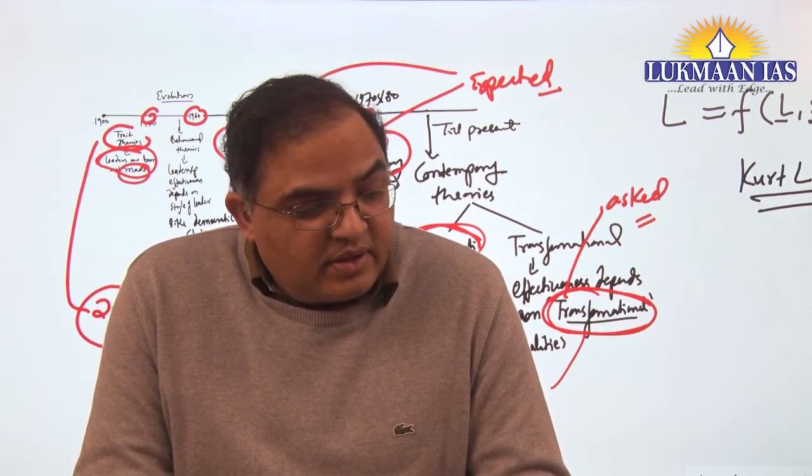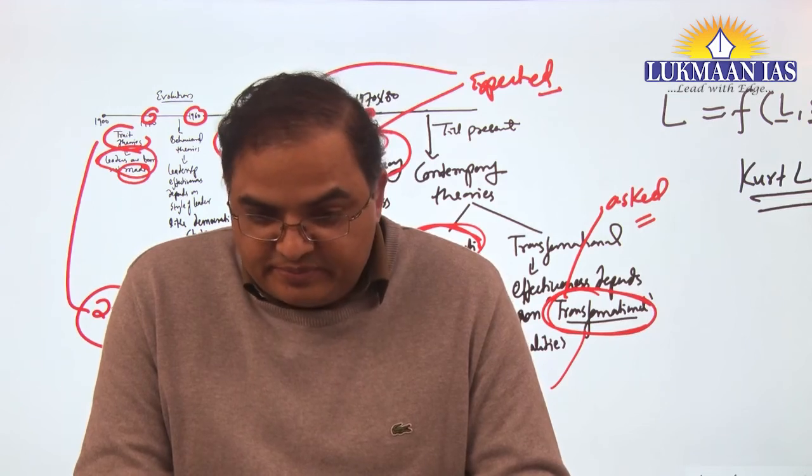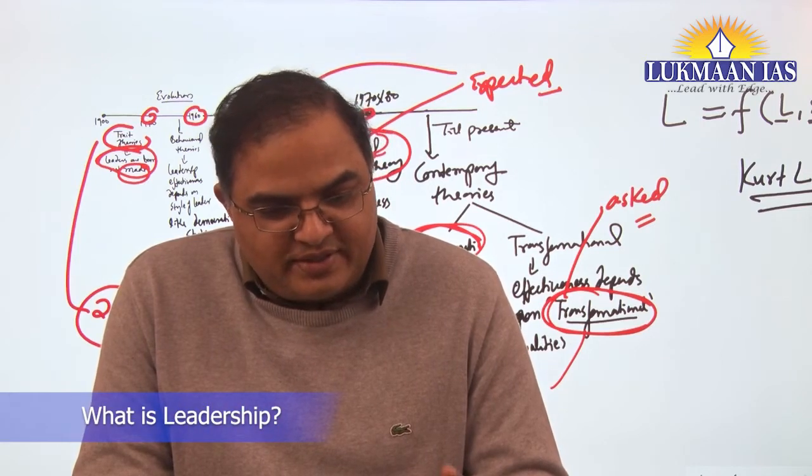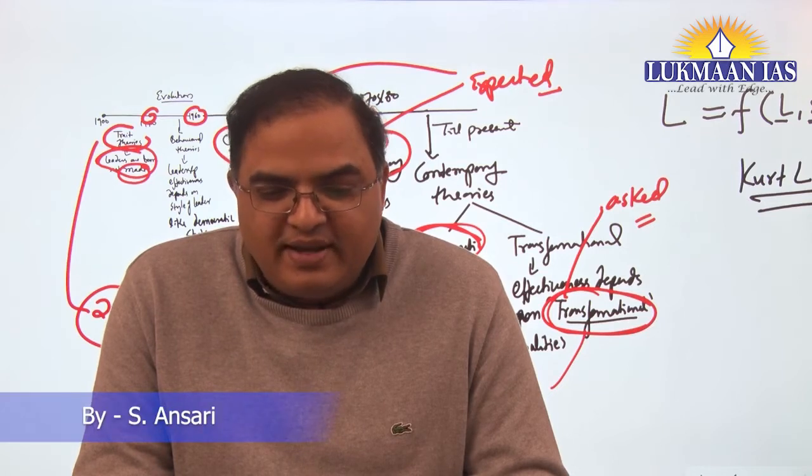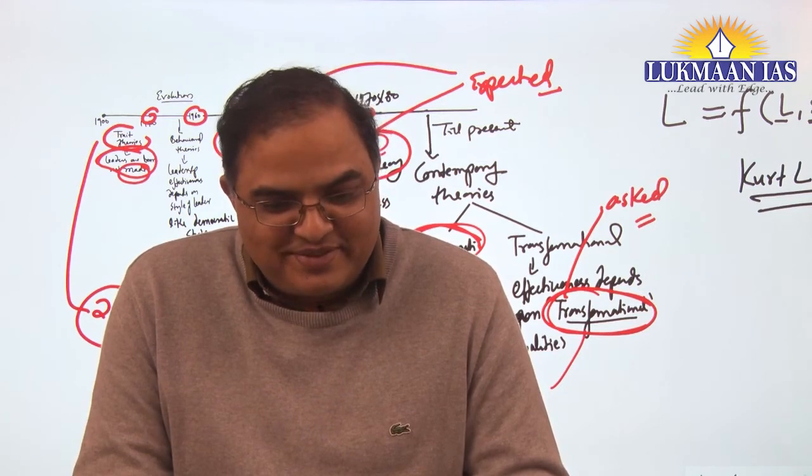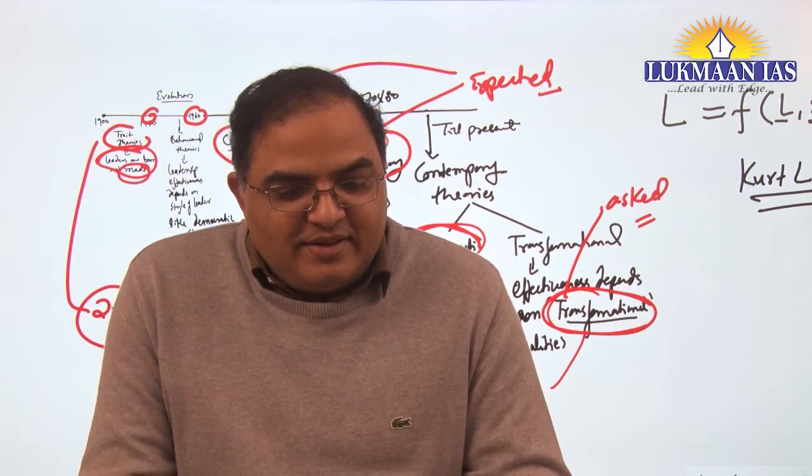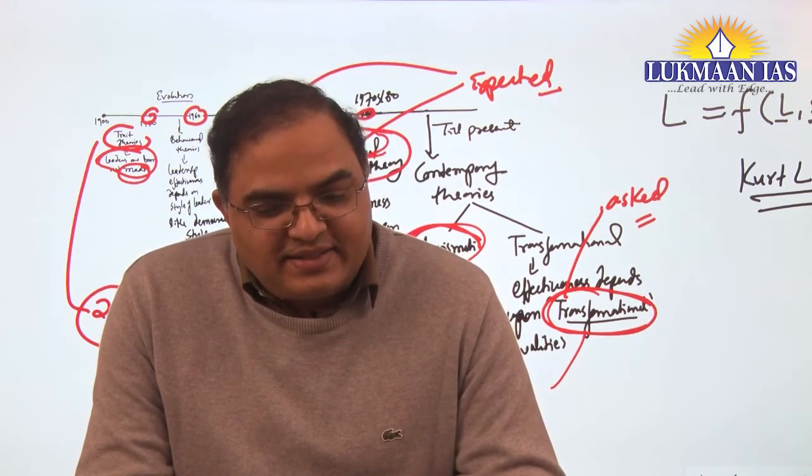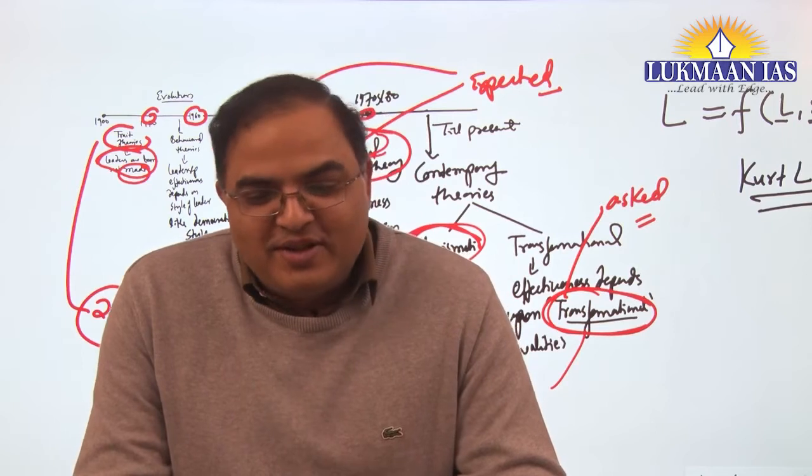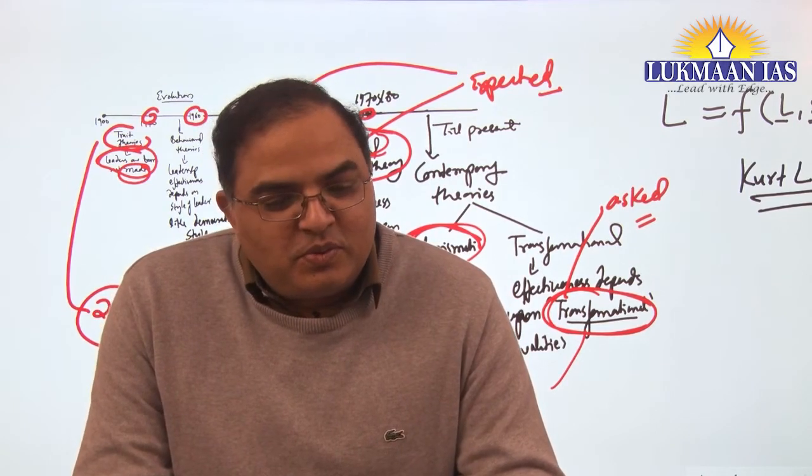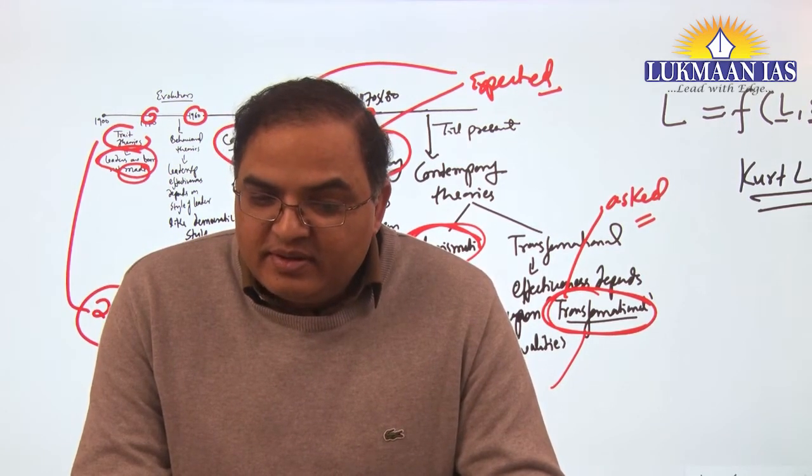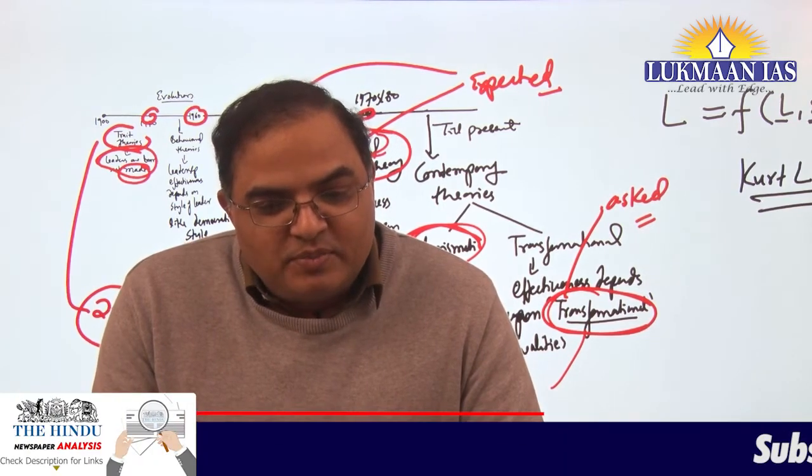Before we take theories, let me tell you - we warn that do not write any example on yourself. Whatever we will be telling here examples, they will be adequate enough for you to write. Because people write different types of examples which are not suitable examples. So don't write any example. Otherwise anyone can be charismatic also, transformational also, transactional also. Second thing is that don't write political examples, especially present political examples, political leaders. Why? They are still growing.